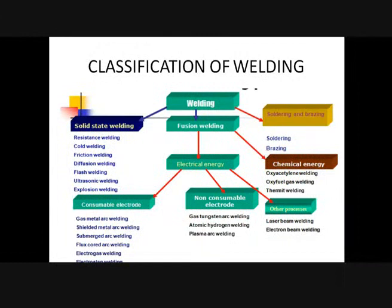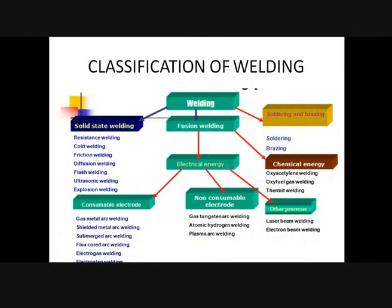Resistance welding: the joint is produced by melting the parent material and also with the application of pressure. So resistance welding involves both melting the parent material and applying pressure, making it a fusion pressure welding operation. Cold pressure welding: at room temperature itself, with the application of a large amount of pressure, if a joint is produced, it is called cold pressure welding.